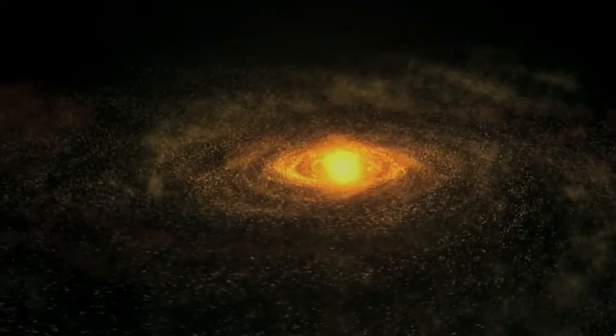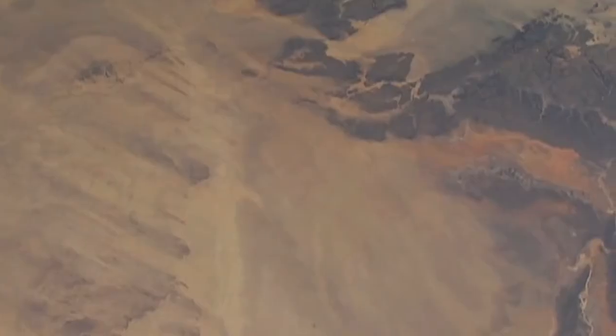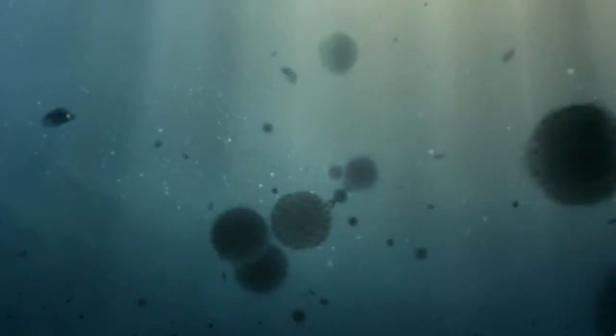The formation of the solar system may have been triggered by a nearby supernova explosion. After the Sun turned on, its ultraviolet light poured into our atmosphere, its warmth generated lightning, and these energy sources sparked the origin of life.